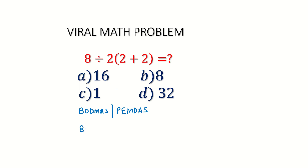So we can write this 8 divided by 2, and 2 plus 2 gives 4. Now the bracket is converted into multiplication. So 8 divided by 2 multiply 4.